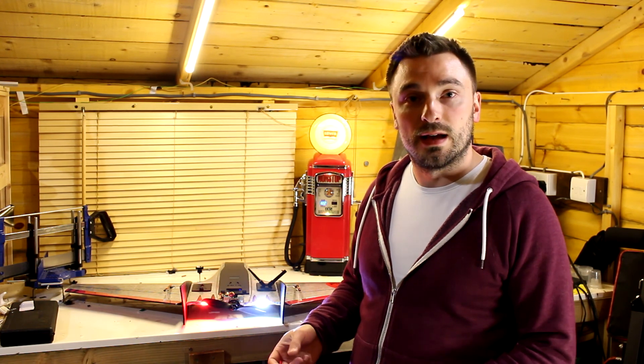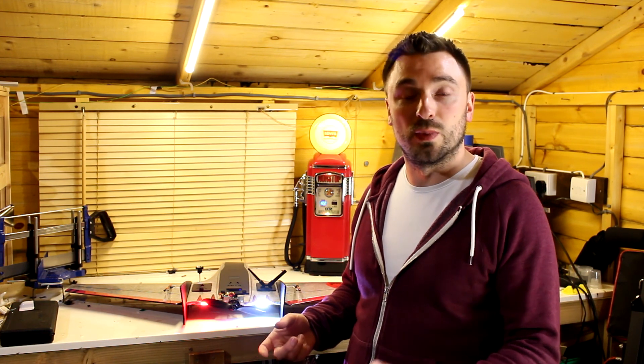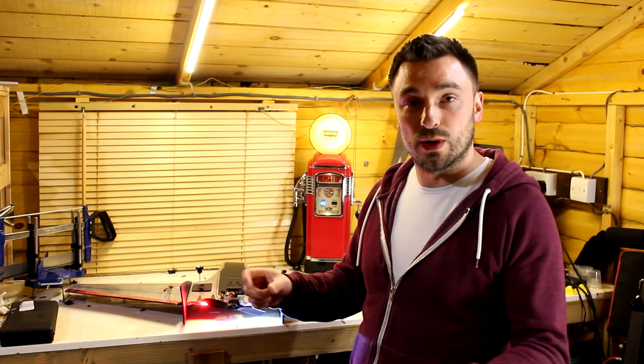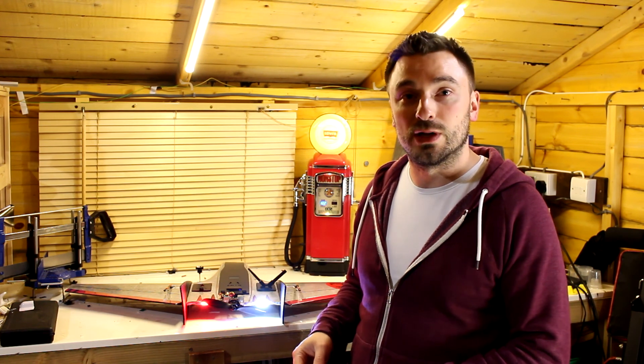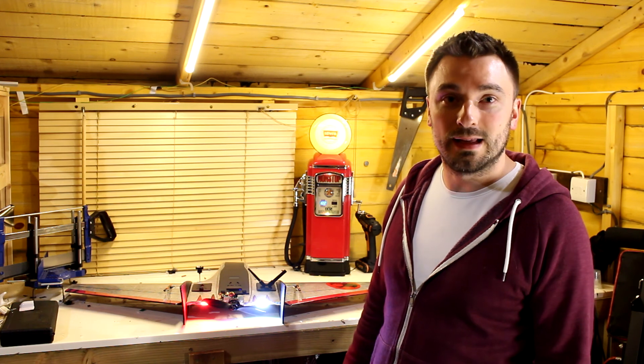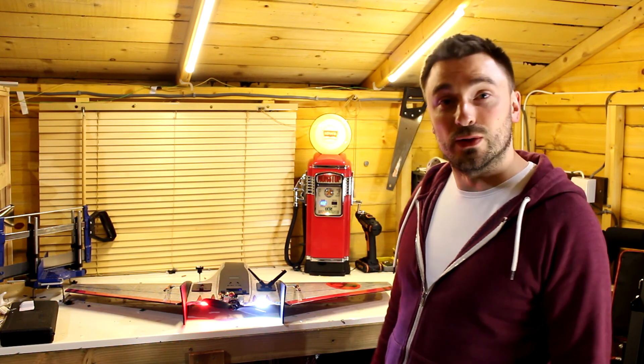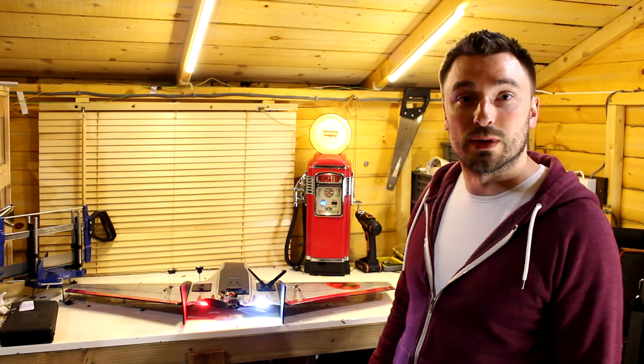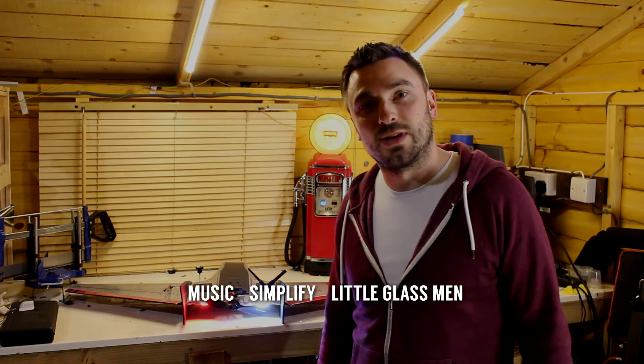But essentially the COB LEDs the actual technology that's in them is no different to your standard LEDs you'll have on LED strips or anything else the only difference really is the way that they're assembled and packaged so you have the one substrate with many different LED chips so hopefully that's been a good introduction to the COB LEDs and hopefully you'll see some videos of this guy flying as well soon so thanks for watching and goodbye.